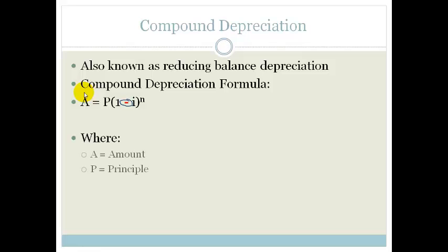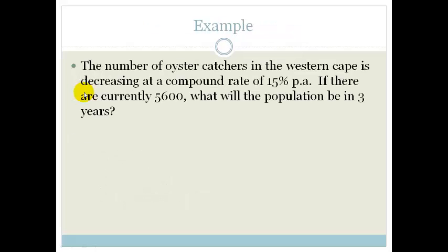Your P is your principal, your A is your amount, your I is your interest in the decimal form and N is the number of years. So let's do an example.